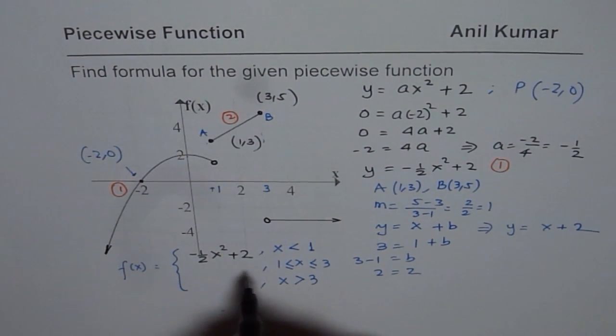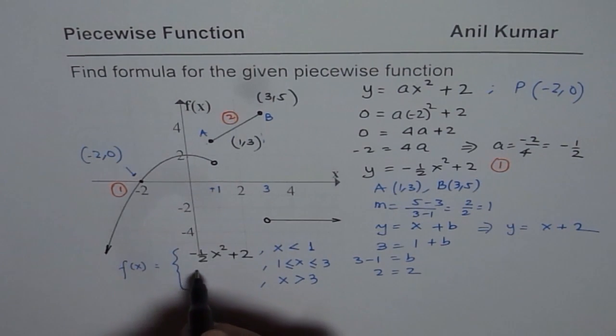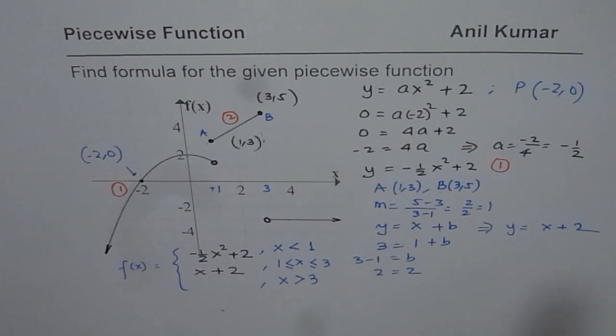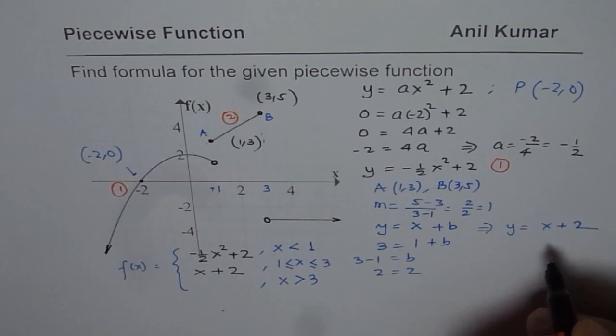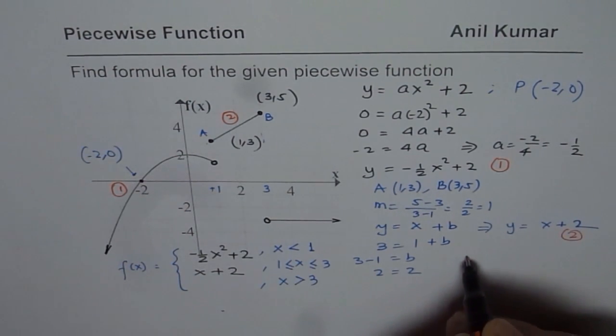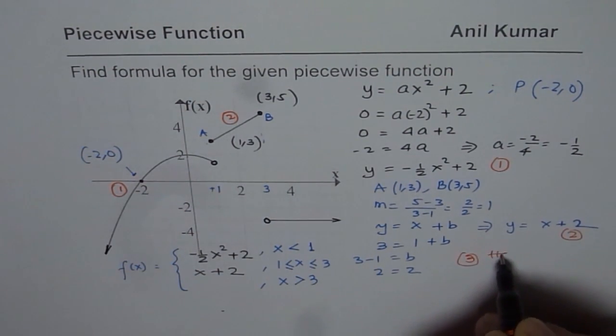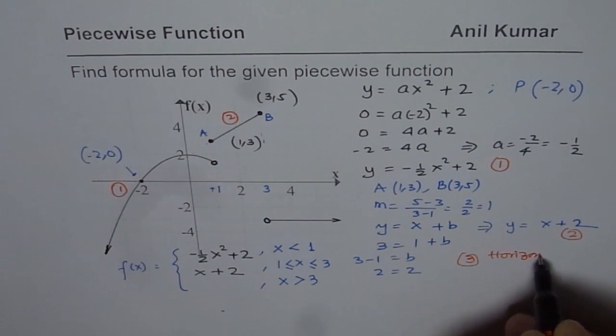So we can write second piece as x plus 2. Third piece here, so that is the second piece. Now let's see the third piece here is a horizontal line. Horizontal line.